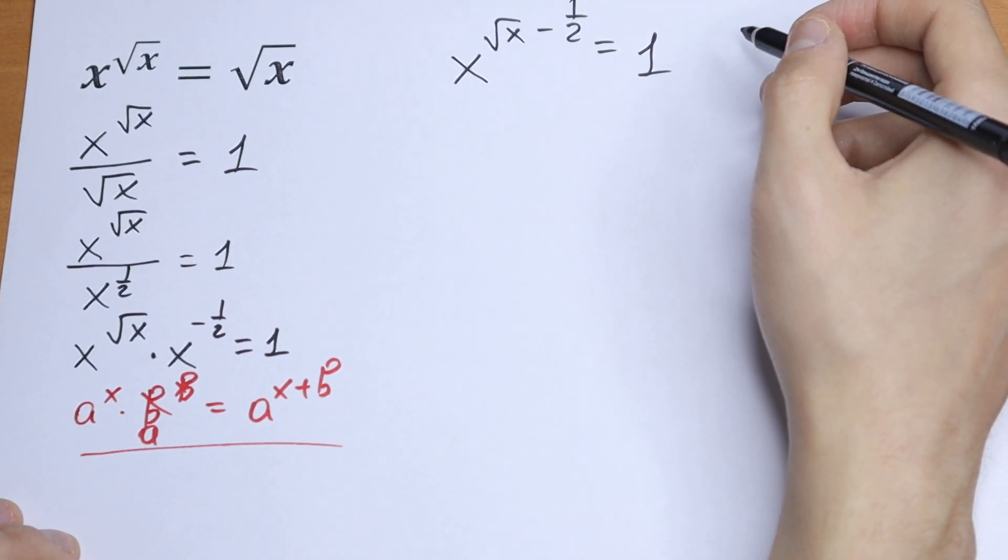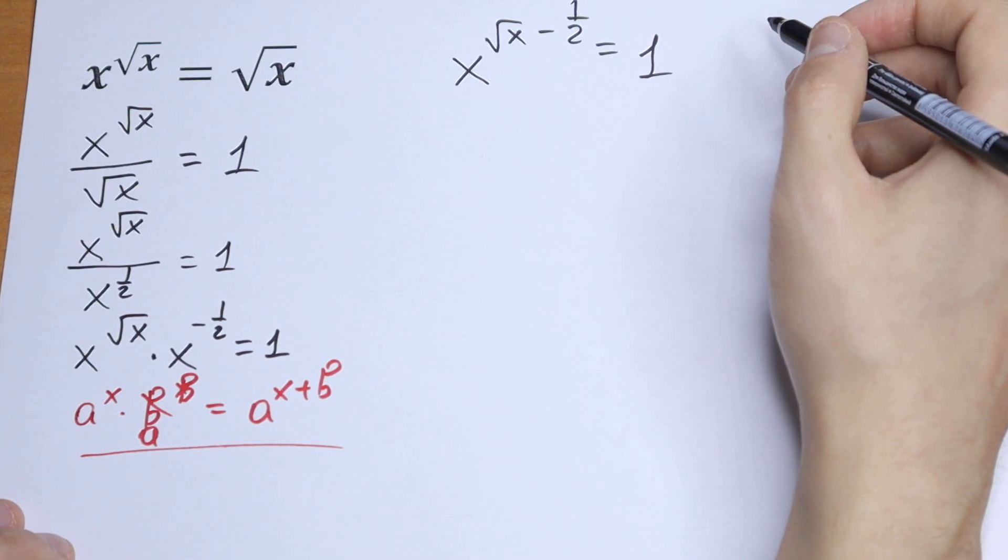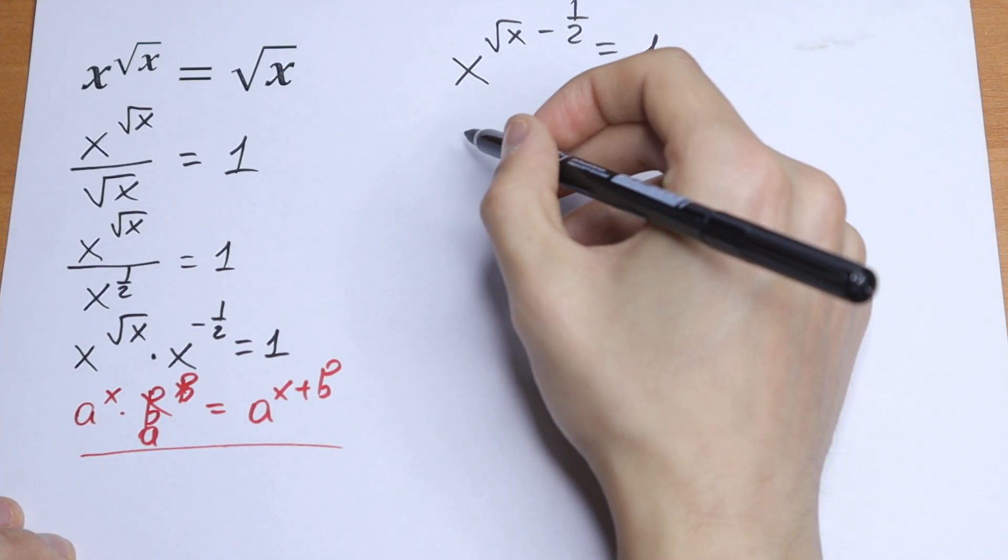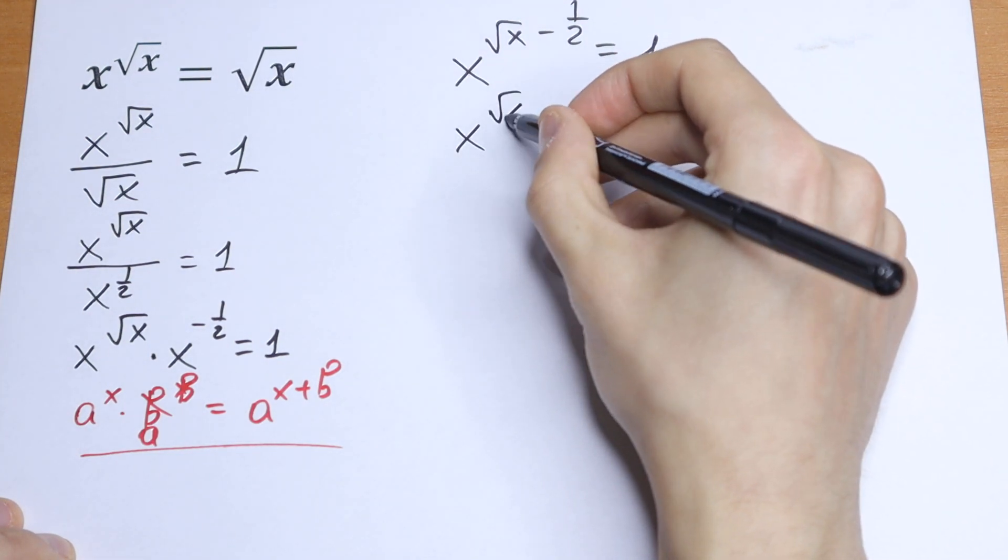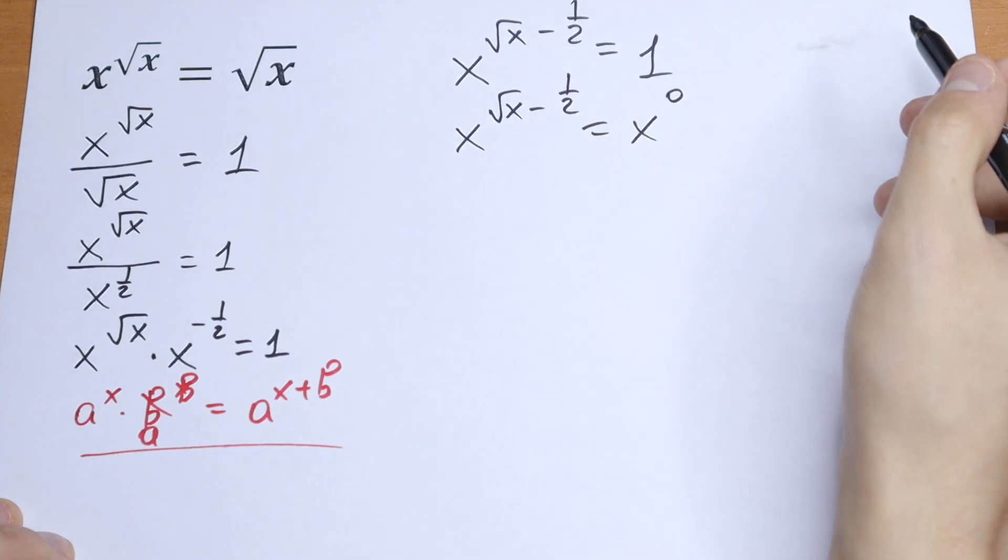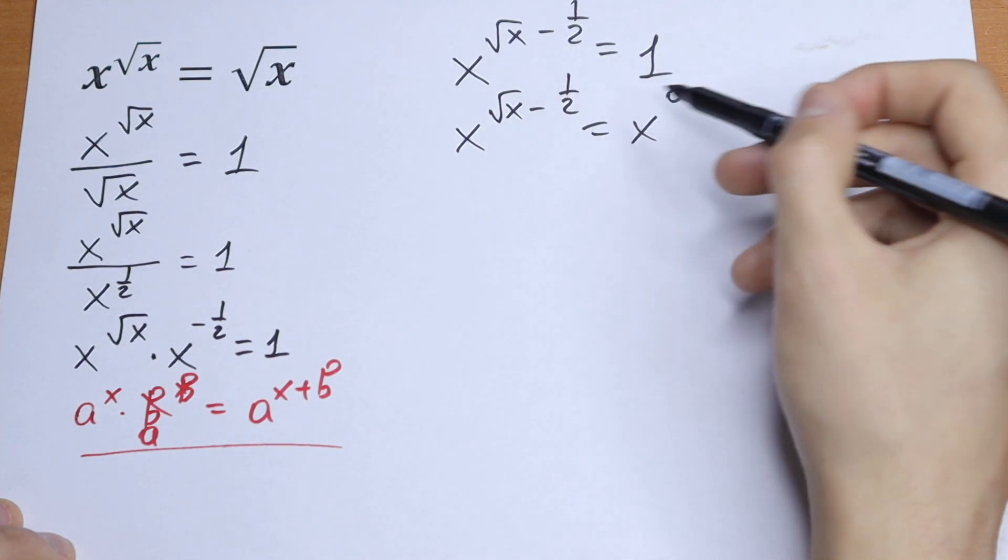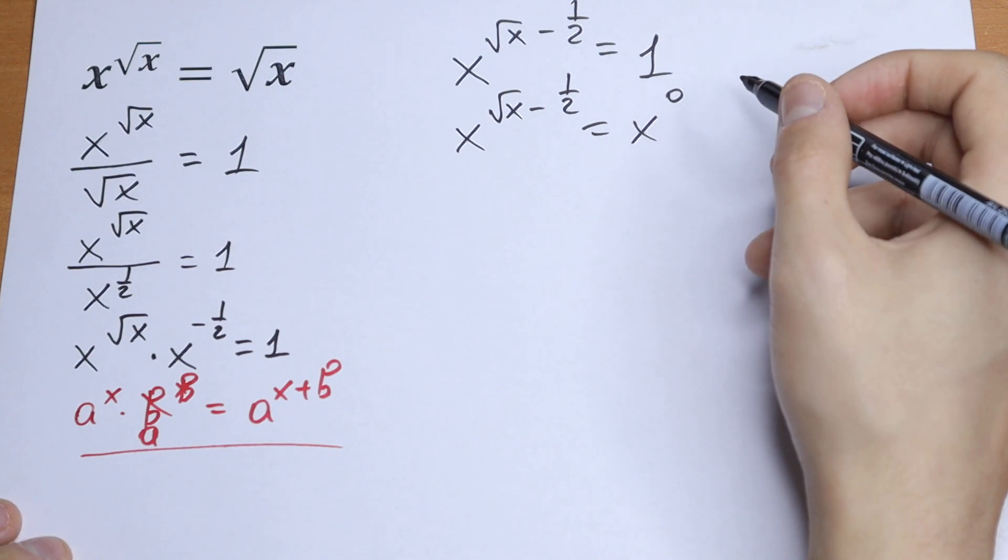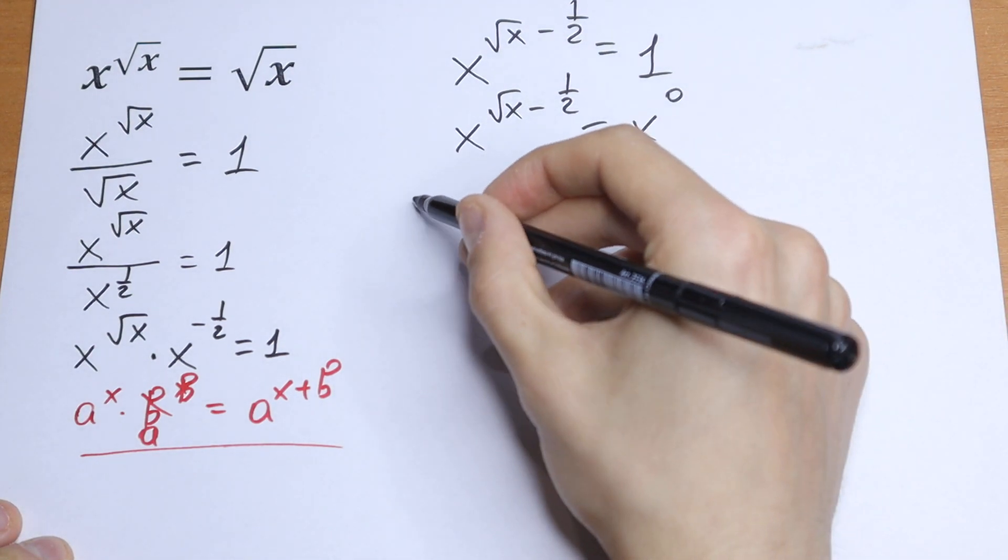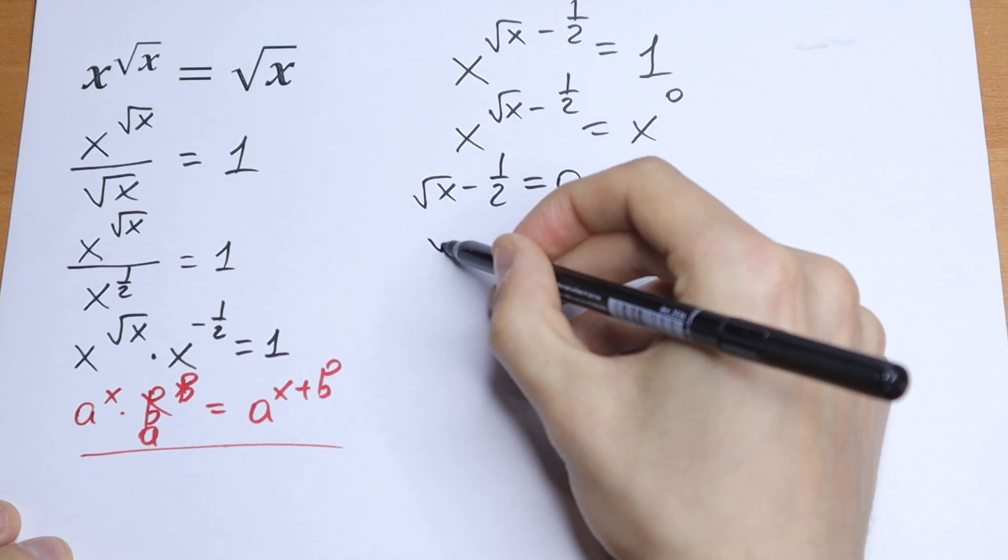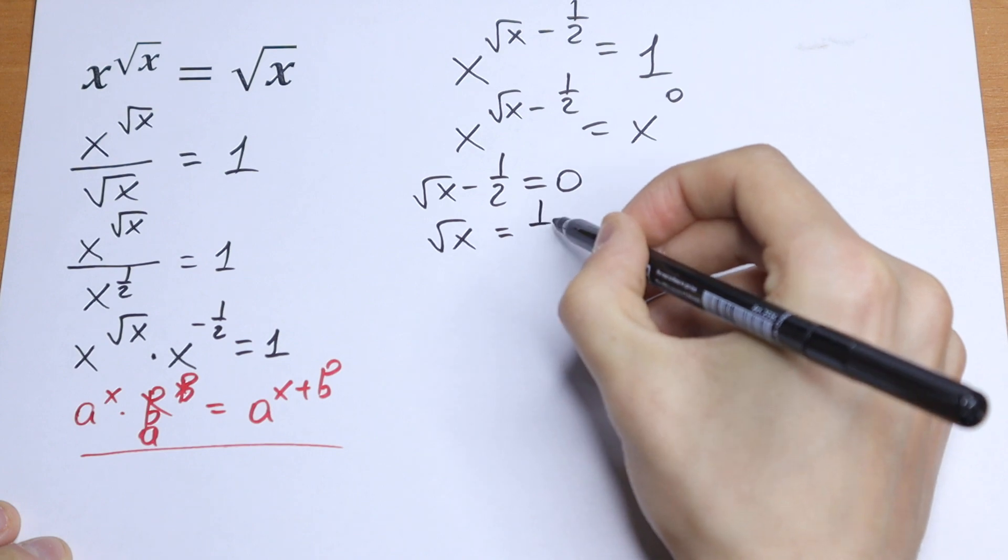And this is our final equation but we have to solve this. We can express this one as x to the zero power, so x to the power square root of x minus one-half equals x to the zero power. Same basis, so we need to write an equation with our exponents: square root of x minus one-half equals zero, so square root of x equals one-half.